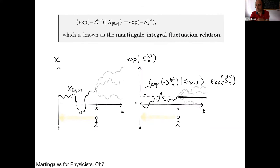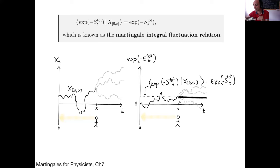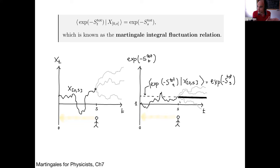This means that if you know the Langevin process up to time s but not the future, the expectation of e^(−S) in the future equals the last observation — you neither expect it to grow nor decrease. This is the martingale property for e^(−S). It is not the typical martingale you see in mathematics books; here you condition over the dynamics and observe expectations of the thermodynamic process.